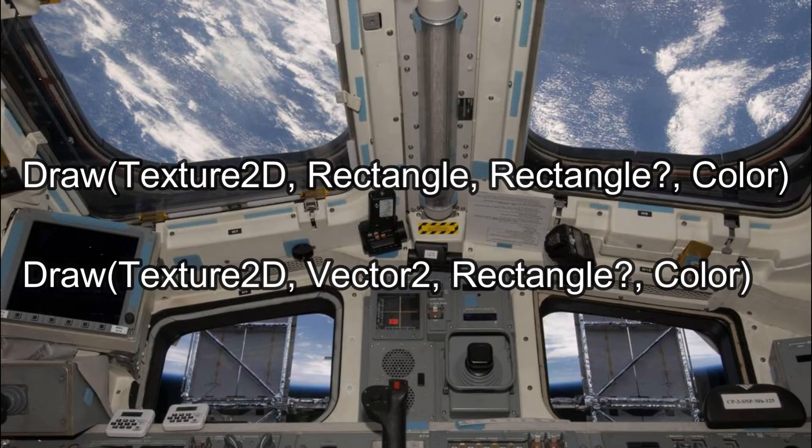The next two add one more parameter changing the draw's behavior a little. A nullable version of a rectangle is added. This is where the sprite exists in the texture in pixel coordinates. This is used when you only want to draw a portion of the texture you were sending it, like if you want to use a sprite sheet. If you pass null as the argument, it will treat it like it's the whole texture, just like the previous two draw methods.